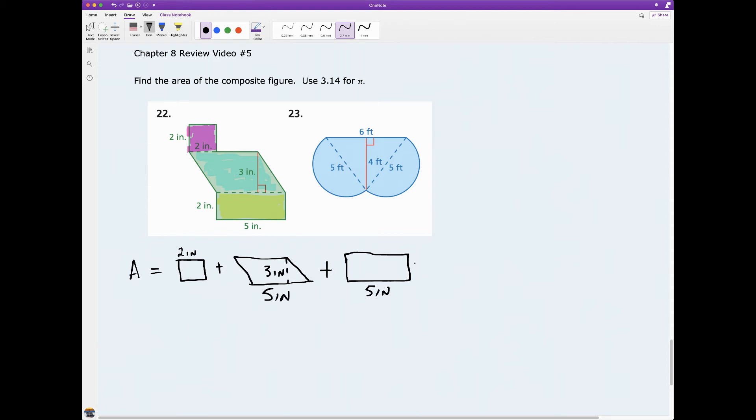How do we do this? The formula for the area of a square is I take one side of the square and I square it, plus the area of a parallelogram which is the base times the height, plus the area of a rectangle which is the length times the width. So this is 2 squared plus 5 times 3 plus 5 times 2.